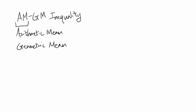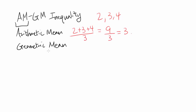These are two different ways to find measures of centers, specifically mean. For Arithmetic Mean, let's say you're given quantities 2, 3, and 4. To find Arithmetic Mean, you add up all the numbers and divide by how many numbers you have. In this case, you have 2 plus 3 plus 4, which is 9, divided by 3, which gets you 3.